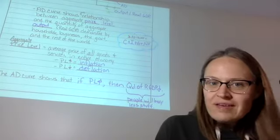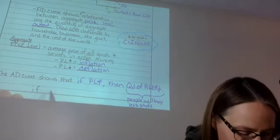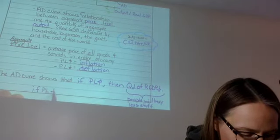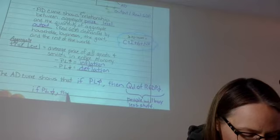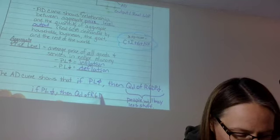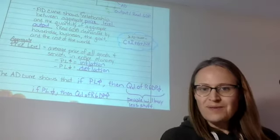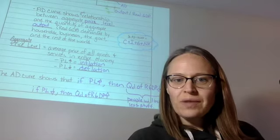And then the opposite of this is also true. So we can also write if the price level decreases, then quantity demanded of real GDP goes up, which means that people will buy more stuff.